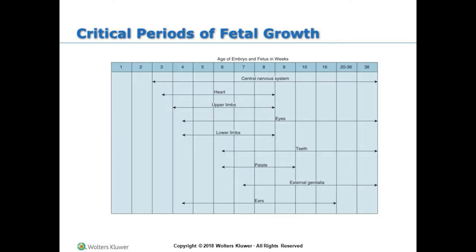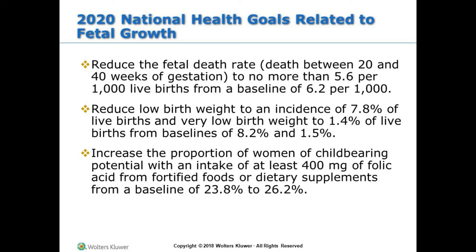The table shows the critical periods of fetal growth. The 2020 National Health Goals related to fetal growth include: reduce the fetal death rate (death between 20 and 40 weeks of gestation) to no more than 5.6 per 1,000 live births from a baseline of 6.2 per 1,000; reduce low birth weight to 7.8% of live births and very low birth weight to 1.4% from baselines of 8.2% and 1.5%; and increase the proportion of women of childbearing potential with an intake of at least 400 milligrams of folic acid from fortified foods or dietary supplements from a baseline of 23.8% to 26.2%.